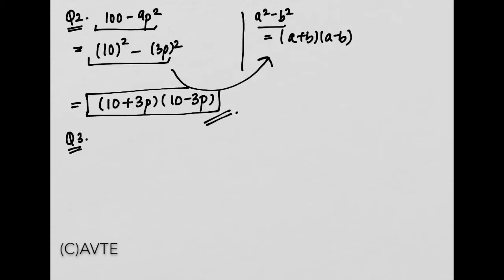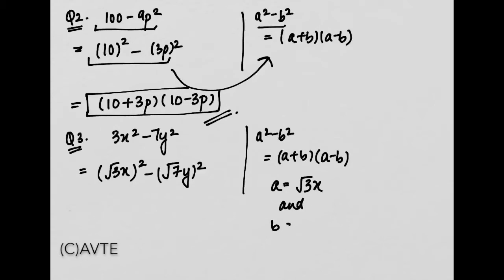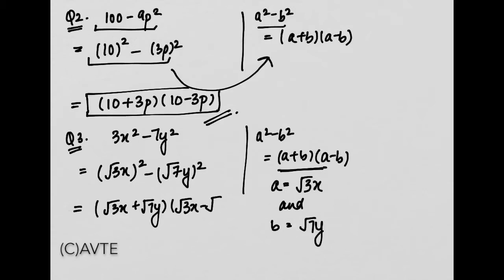Aaiye dekhte hain question number 3: 3x square minus 7y square. Yeh question bhi a square minus b square, that is a plus b into a minus b ke form mein lag raha hai. Kyunki 3 ek perfect square nahin hai, toh hum uska root lenge: root 3x whole square minus root 7y whole square. Yahan par hamara a hai root 3x aur hamara b hai root 7y. So the factors are: root 3x plus root 7y into root 3x minus root 7y.